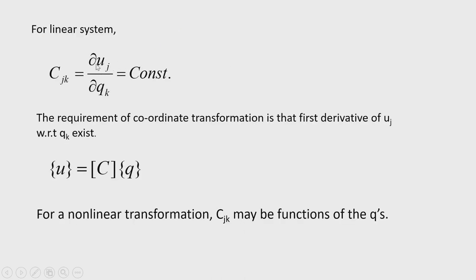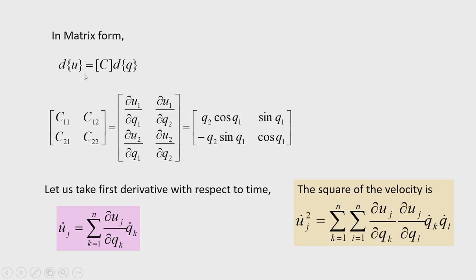For a linear system, ∂uj/∂qk is a constant quantity. We can write the transformation as u = C·q, and differentiate to get u-dot = C·q-dot. Therefore kinetic energy is T = ½·q-dot^T·C^T·M·C·q-dot, where C^T·M·C is the generalized mass matrix M_kl.